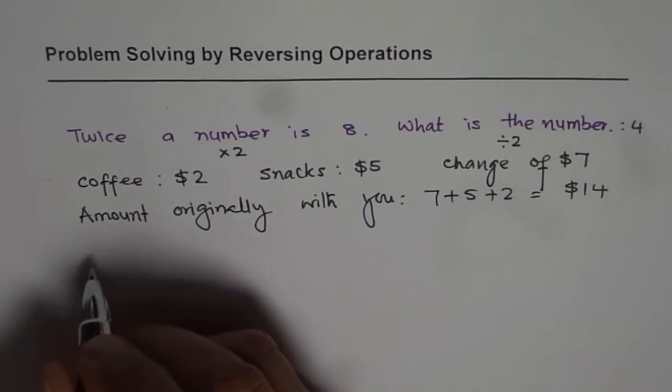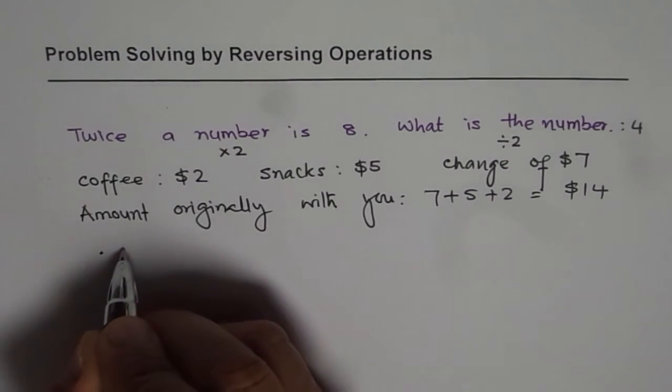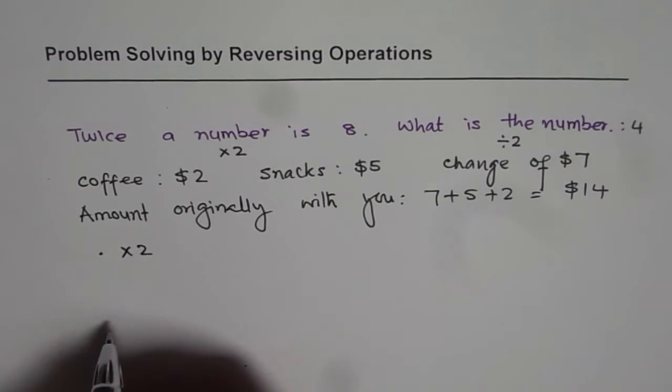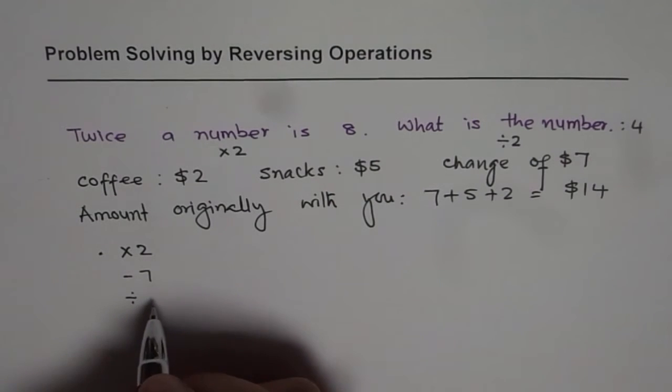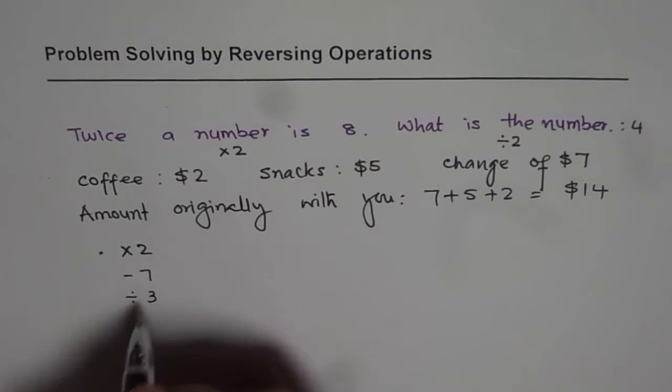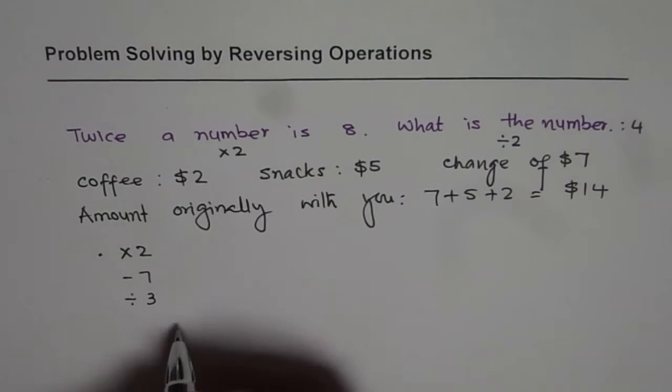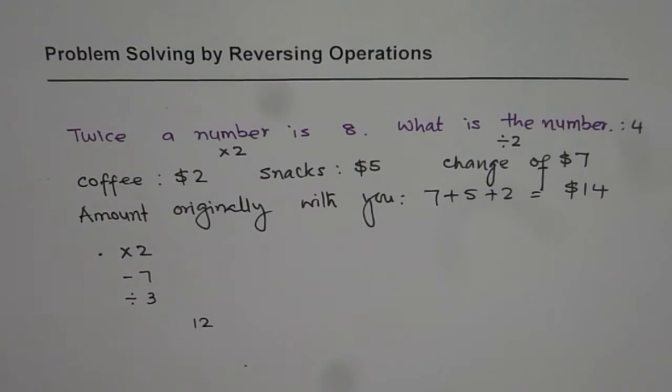If I say, you do times 2 a number and then you take away 7 and then divide that number by 3. And what you get is 12. Then what the number was, how will you do that part?